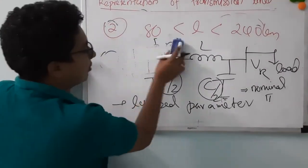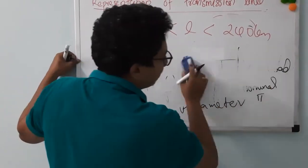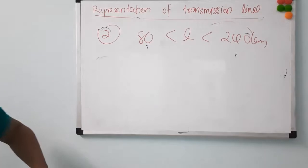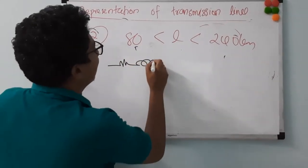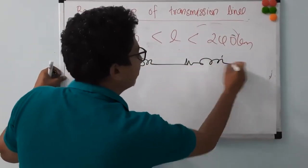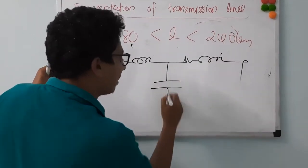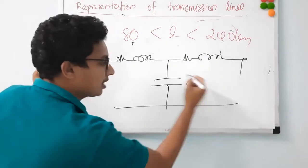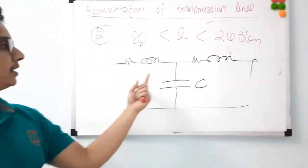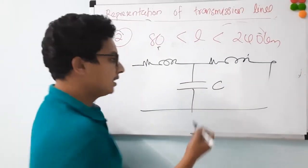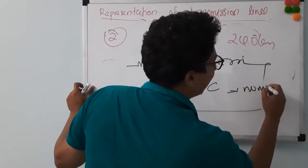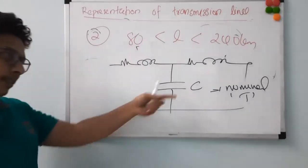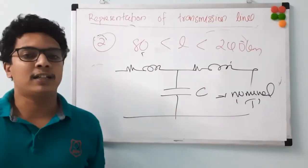There is another configuration to represent the medium transmission line. In this case, your resistance and inductance are split on both sides, and your capacitance is placed in the middle. Your capacitance comes as-is, and your resistance and inductance get divided on both sides. Such a configuration is called nominal T. We will discuss more on this in the coming sessions.